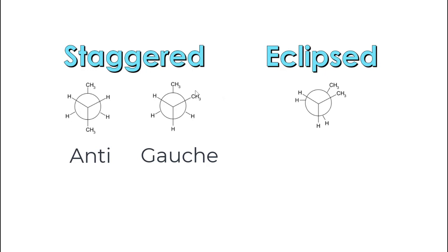When you have two groups that are adjacent to each other or gauche, or if you have an eclipsed Newman projection where you have two bulky groups overlapping each other — such as these two methyls — that can create steric strain or crowding, and that is going to make the conformation less stable or higher in energy.